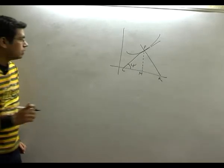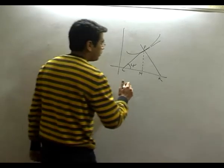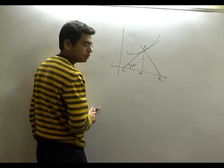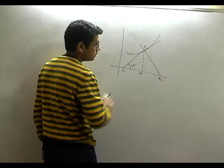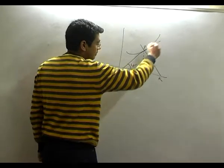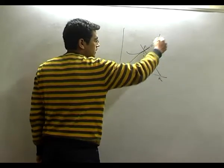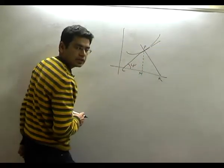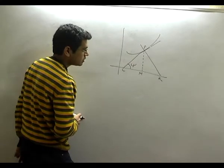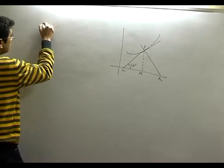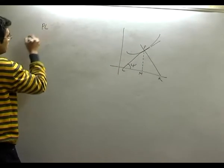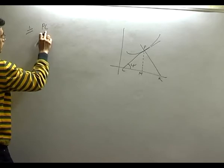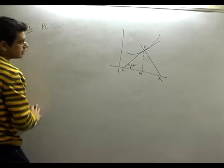Now, first you will find out the length of the tangent. The tangent is this one. So, the length of the tangent — as the name suggests — PL is my length of tangent.